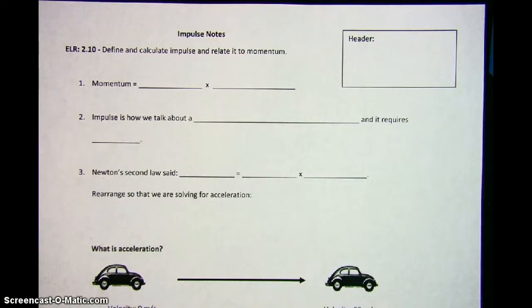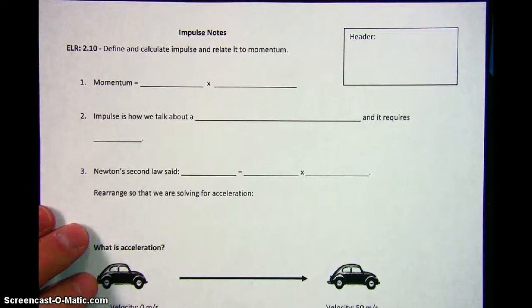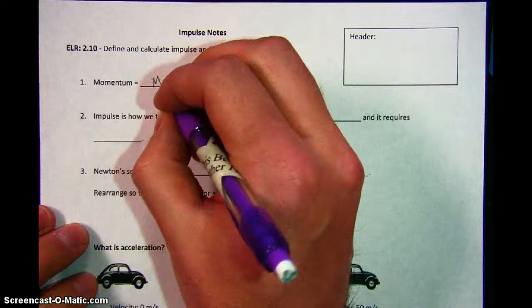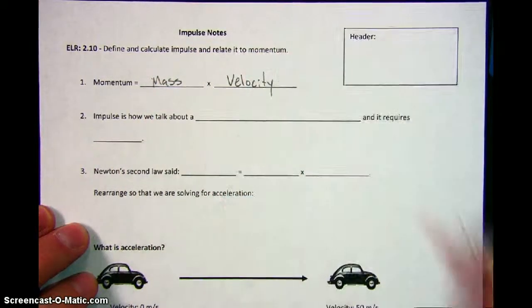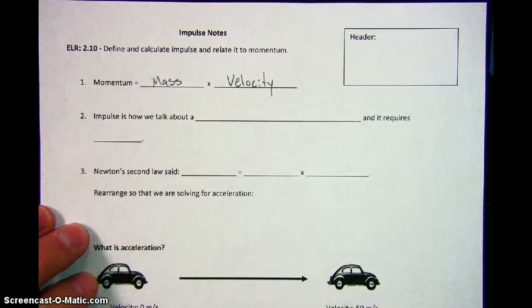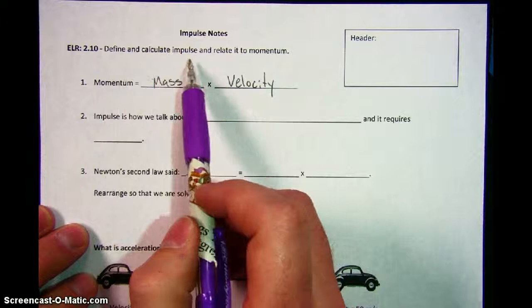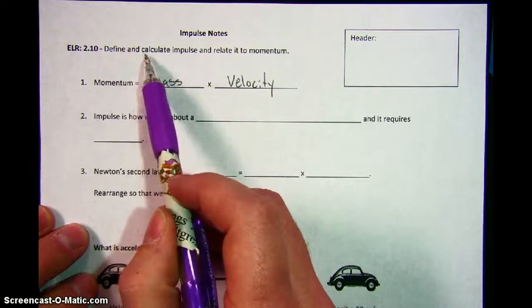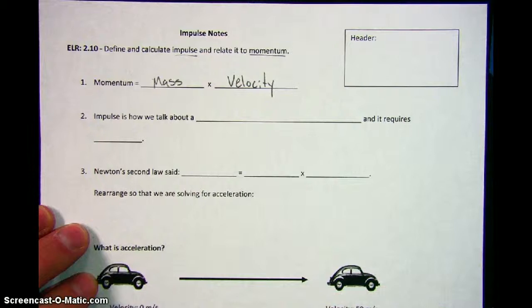The first thing that we're going to start with is actually something that you already know pretty well, and that's momentum. We're going to start off with an equation for momentum before we get into what impulse is. Momentum is mass times velocity. The reason why we're starting with momentum is the ELR that we're dealing with is to identify and calculate impulse, and then your job is to relate it to momentum.